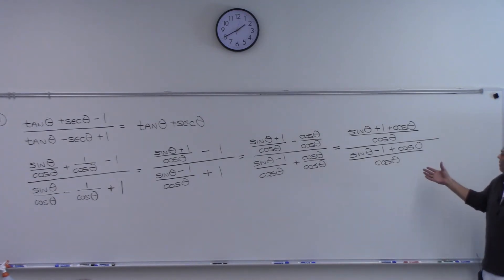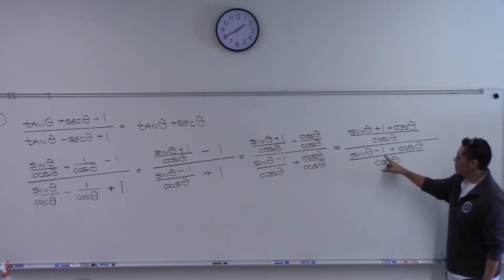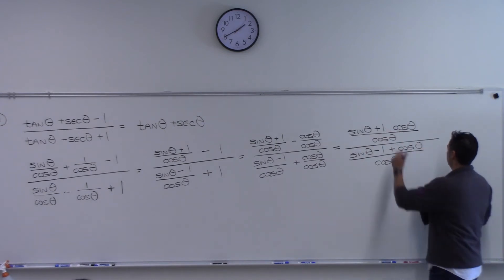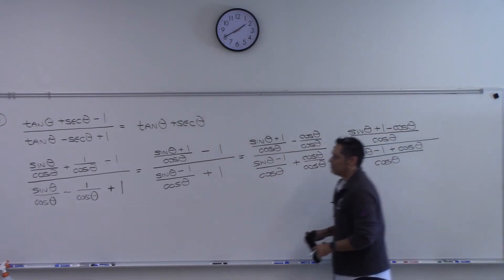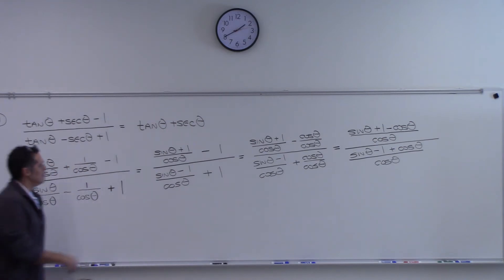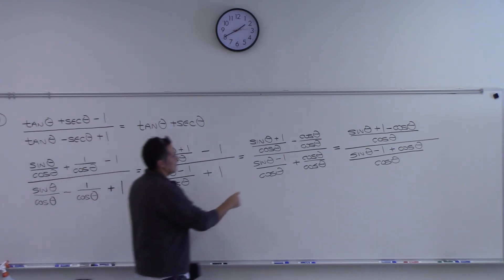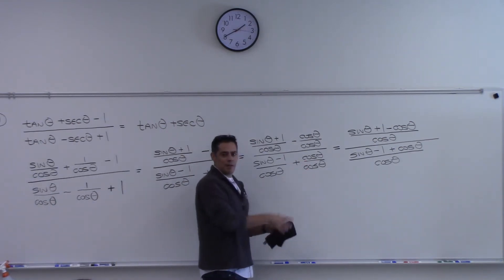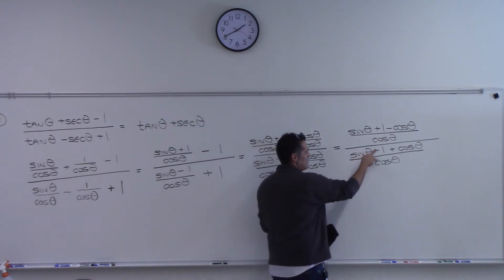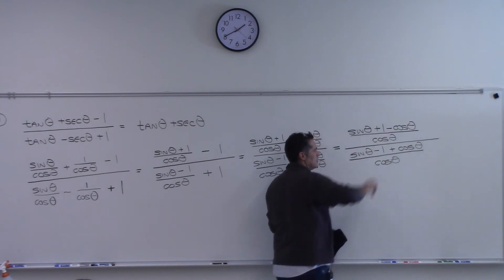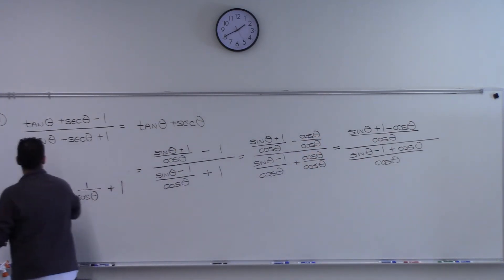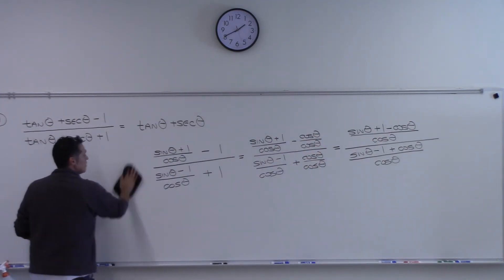This is a fraction divided by a fraction, so we can do copy-dot-flip: keep the top, flip the bottom, and multiply. Something good is going to happen with the cosines — they cancel.